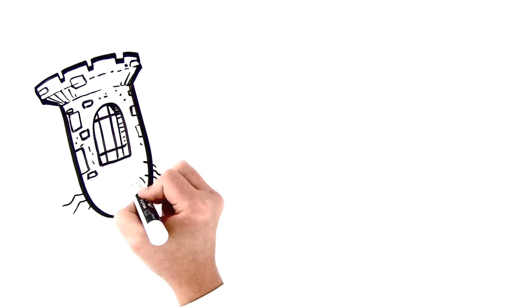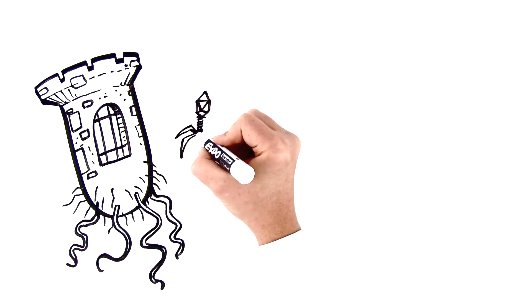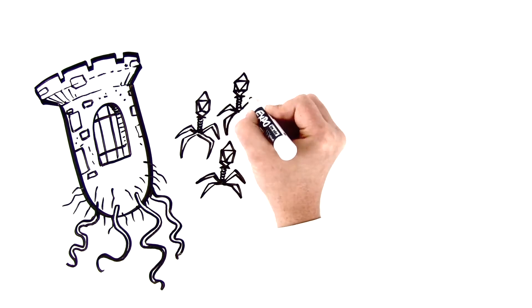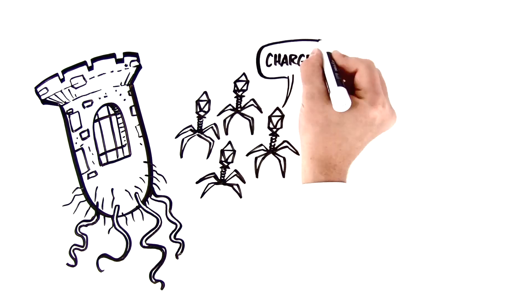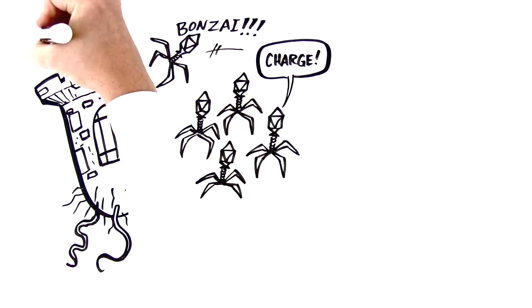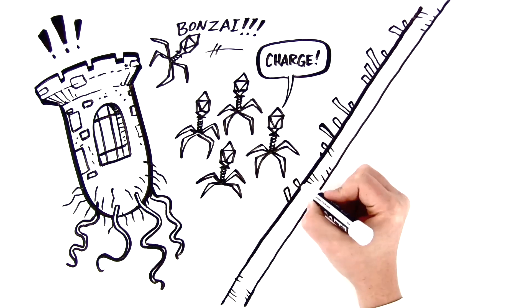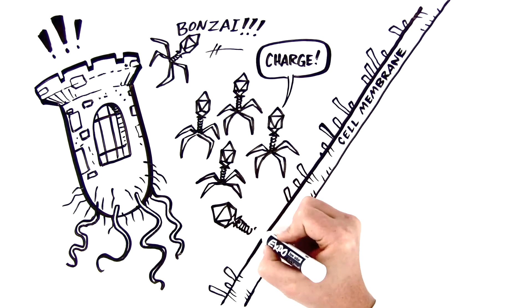Picture bacteria as miniature castles. Every day, bacteriophages lay siege to the bacteria's tough outer walls, sending virus after virus careening towards their gates. And tough as those walls may be, even a blind squirrel finds a nut once in a while.